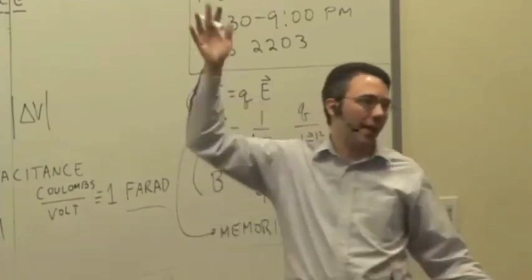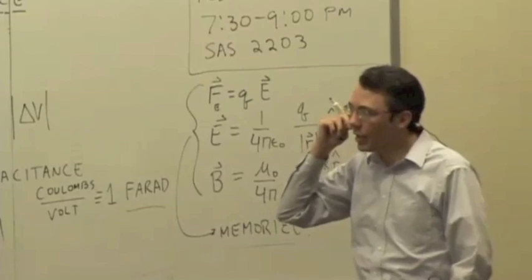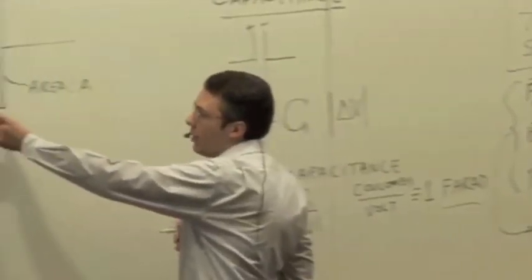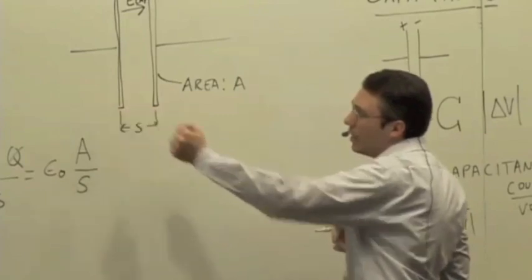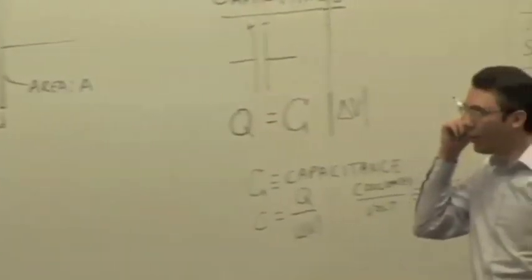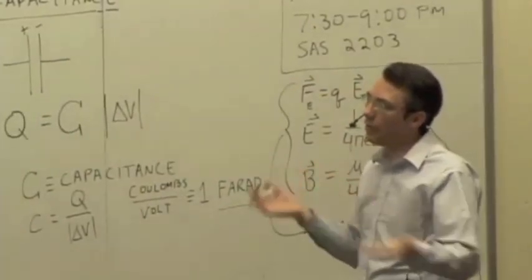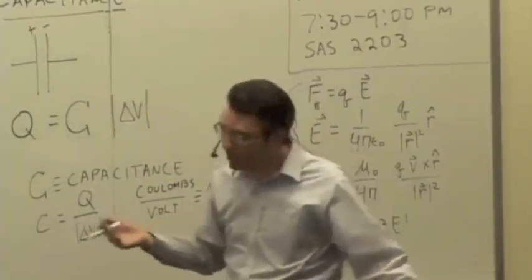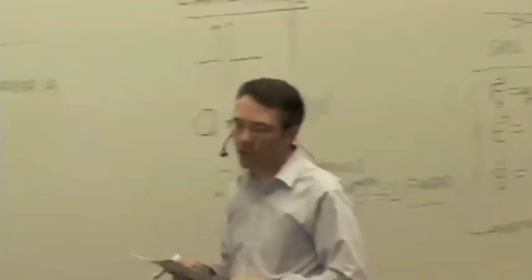The bigger the plates, the more charge you're going to be able to store, so you have a bigger capacitance. The smaller the gap means a smaller potential difference for the same amount of charge, so making the gap smaller gives you a larger capacitance.